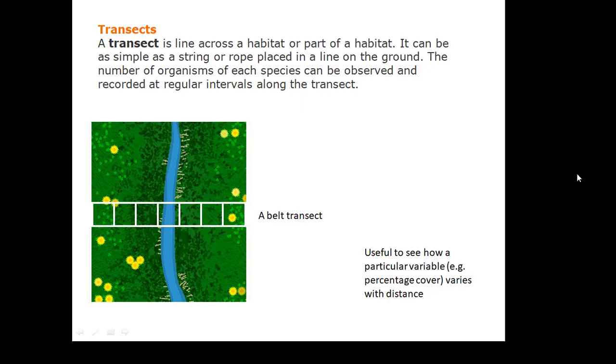If your independent variable is distance, then you do a transect. Yes, you put your quadrats in a line. You can have a continuous transect. Quadrat, quadrat, quadrat, quadrat. Or you can have an intermittent one. So a quadrat and then a gap and then another quadrat and then a gap. Depending on the distance involved. Okay. So again, if distance is involved, then you would do a transect. Either a belt transect or a line transect.